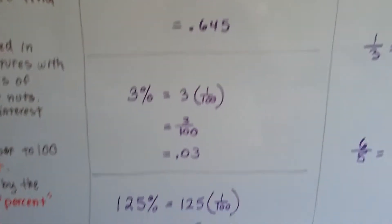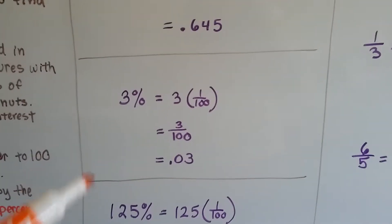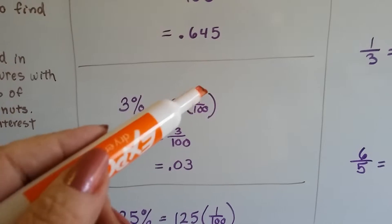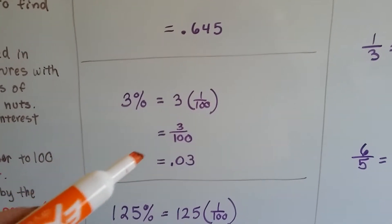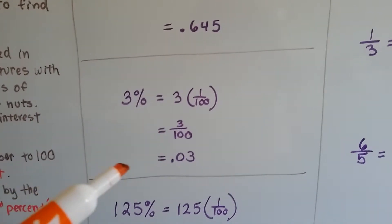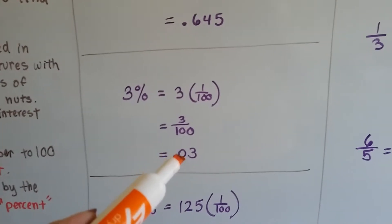Let's try another one. We've got 3%. And all that means is 3 times one one-hundredth. That's three one-hundredths. And as a decimal, it's 0.03.